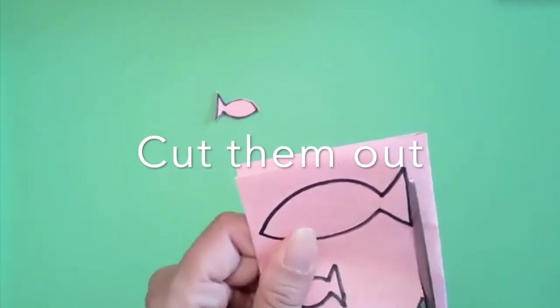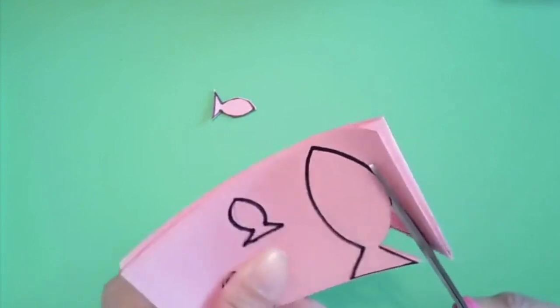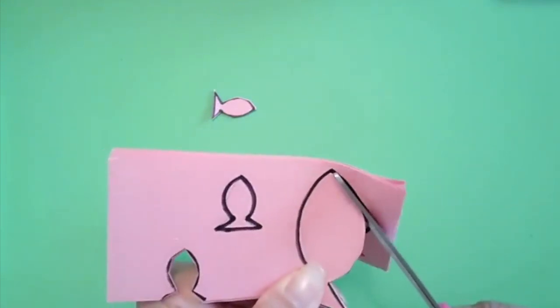If your child is old enough to use scissors then you can save this step for them otherwise you might want to cut the fish out ahead of time.